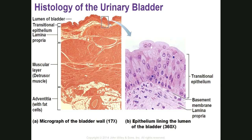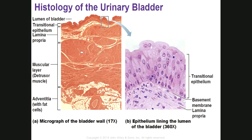Here you can see the transitional epithelium. After that, you have the lamina propria submucosa, and then a thick layer of muscle — the detrusor muscle. This is a very intermingled muscle. We have three layers: inner and outer longitudinal, and middle circular muscle, but we call the whole structure the detrusor.